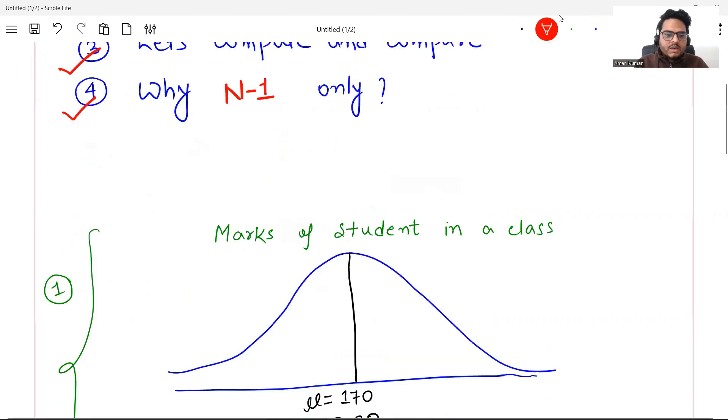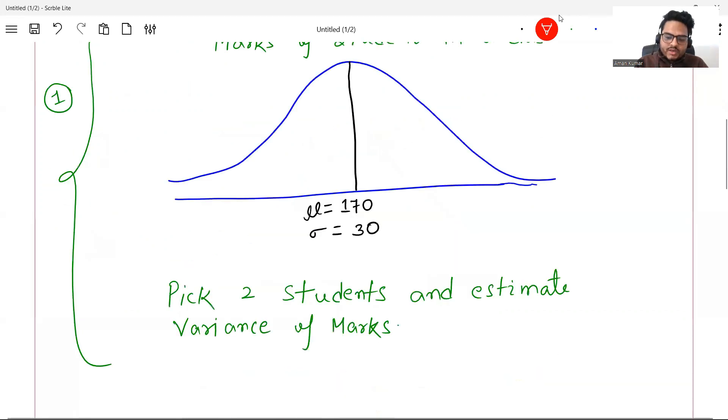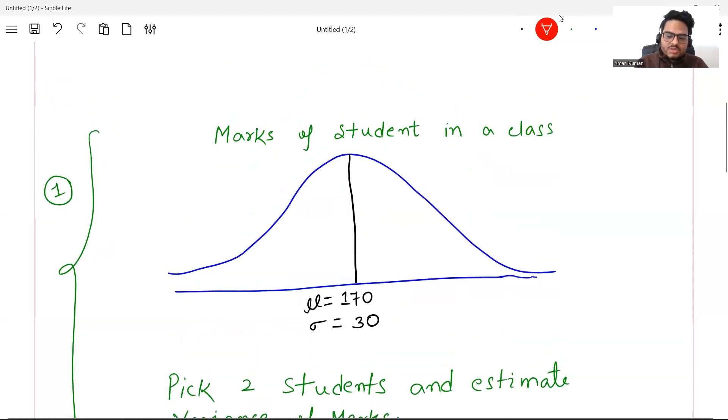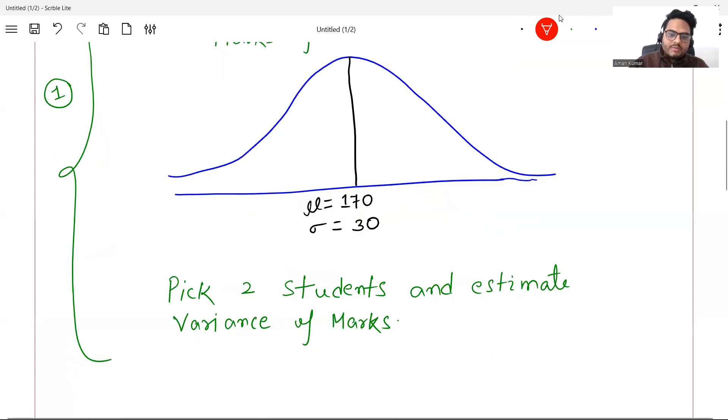First of all, let's say here is the marks of a student in a class. I'm sure you know this is a normal distribution chart. You have a mu and you have a sigma, very simple. You have a standard deviation and you have a mean. Standard deviation is 30, mean is 170. Now I'm telling you pick two students from this class.